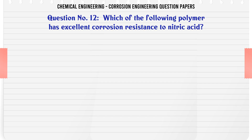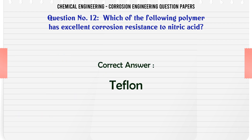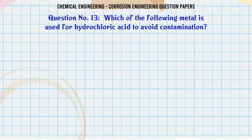Which of the following polymers has excellent corrosion resistance to nitric acid? A. Teflon. B. Polyvinyl chloride. C. Polystyrene. D. Polyethylene. The correct answer is: Teflon.